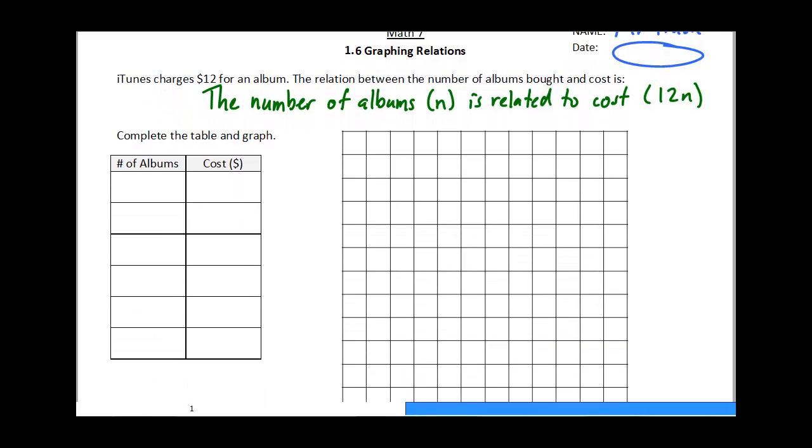So we're going to try and graph this relation, and the first thing we do is create something called a table of values. That's what this is right here—a table that we're going to put some data in and see what we get. We can choose whatever values we want, so maybe we'll do something simple like 0 albums, 1, 2, 3, 4, 5. I'm just going to choose some simple numbers here.